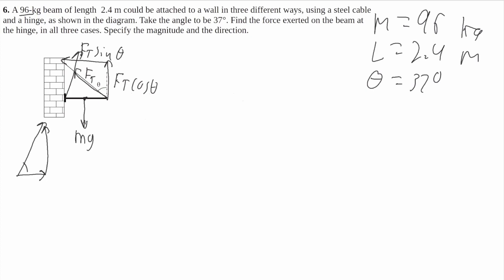And we also need to find this angle here; I'll call it beta. This is the force we're looking for — this will be Fx, and this will be Fy. Now I'm going to say what's positive and what's negative. I'll draw a quick little diagram: right will be positive, up will be positive, left and down will be negative.